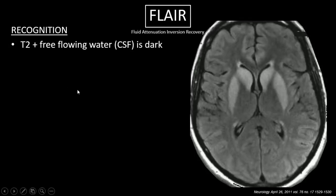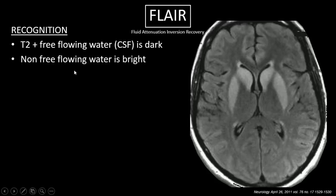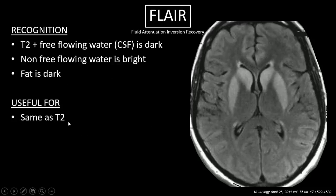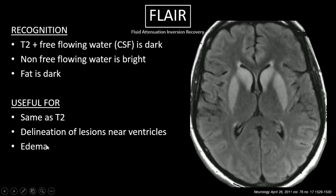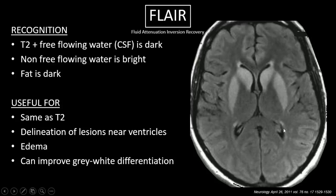Let's move on to FLAIR, which stands for fluid attenuation inversion recovery. I like to think of FLAIR as basically a T2 image, but the CSF spaces are flipped back to being dark or hypointense. Looking here, it looks just like a T2 image — these deep basal ganglia structures, which don't have as much fat in them, are looking pretty bright. Fat is dark, but the CSF is also dark. Also, non-free-flowing water is bright. What is this useful for? Same as T2, but it does a better job of delineating lesions near the ventricles because edema would be bright, while in FLAIR the CSF is dark since it's free-flowing, whereas edema is not. It can also do a great job of gray-white differentiation — just look at the putamen and the head of the caudate, they really stand out.